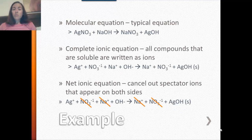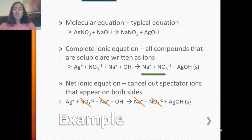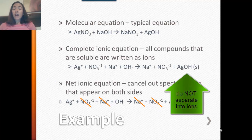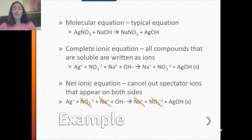When the products form, sodium nitrate is soluble — you can look that up in your solubility rules — so it dissociates into sodium and nitrate ions. Finally, silver hydroxide is not soluble; those hydroxide compounds are precipitates or solids. I'm going to rewrite silver hydroxide with the (s) notation beside it to indicate that it does not dissolve in water. That's the complete ionic equation.